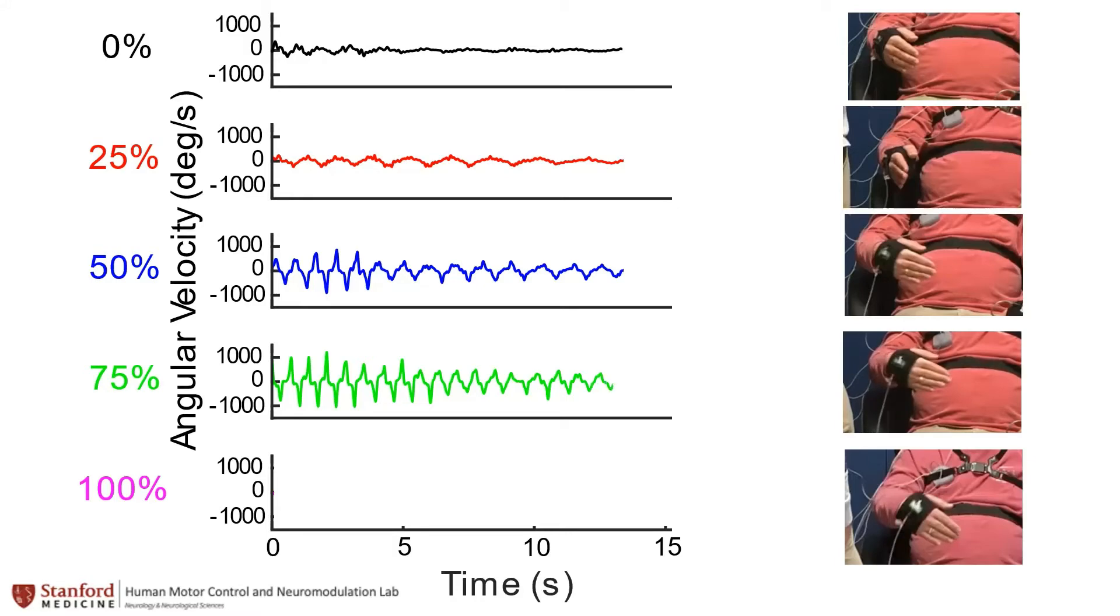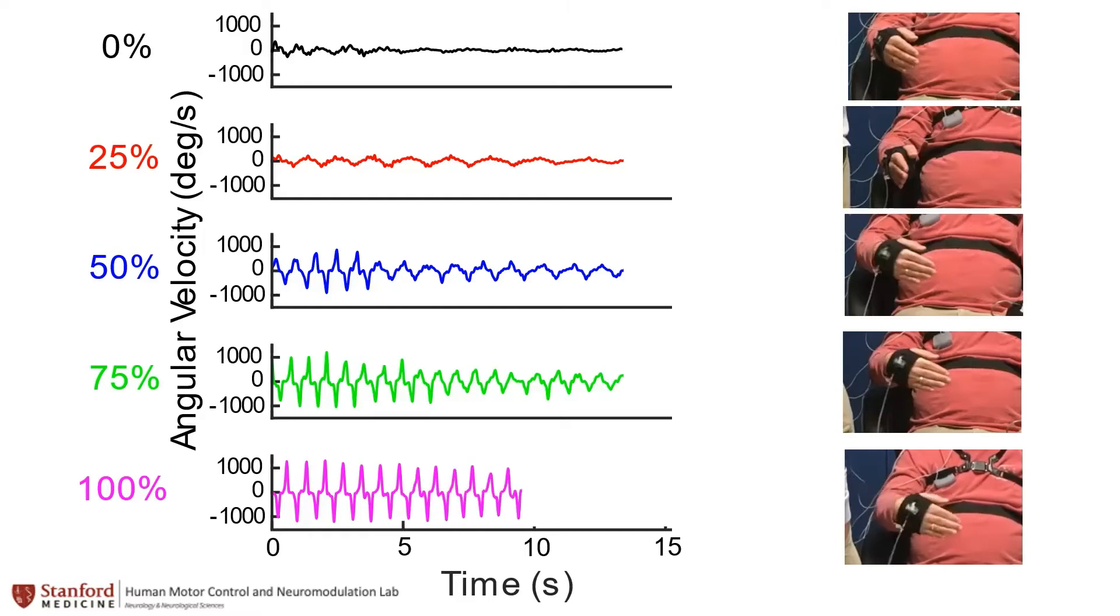Individuals showed an improved ability to maintain faster velocities for the duration of the task. This allowed us to quantify the percent improvement in behavior from the 0% stimulation condition for each incremental increase in stimulation.